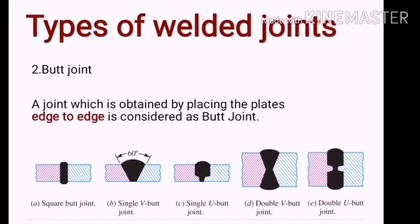Butt joints. In this case, the joint is obtained by placing the plates edge to edge. Various types of butt joints are square butt joint, single V butt joint, single U butt joint, double V and double U as shown in the diagram.